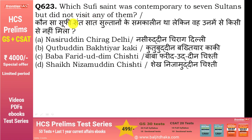कौन सा सूफी संत सात सुल्तानों का समकालीन था लेकिन उनमें से किसी से नहीं मिला? Answer है Sheikh Nizamuddin Chishti, जिन्हें Hazrat Nizamuddin Auliya भी कहते हैं। इनके सबसे famous शिष्य थे Amir Khusrow, जिन्होंने भी पाँच सुल्तान देखे लेकिन Nizamuddin Auliya ने सात देखे। इन दोनों के बीच इतनी गहरी bond थी कि Nizamuddin Auliya की death के कुछ महीनों बाद ही Amir Khusrow की भी death हो गई।